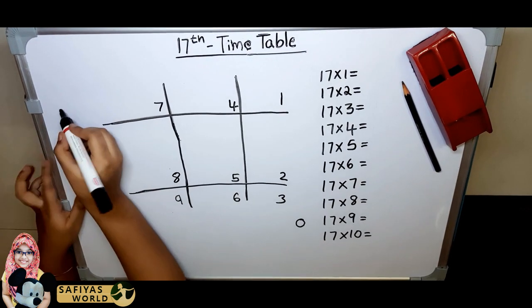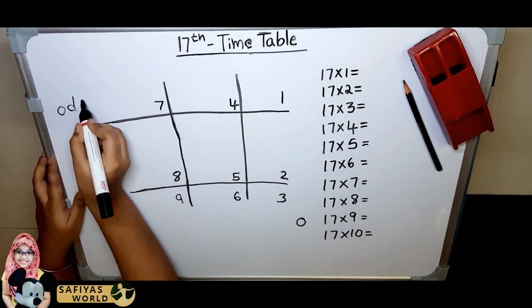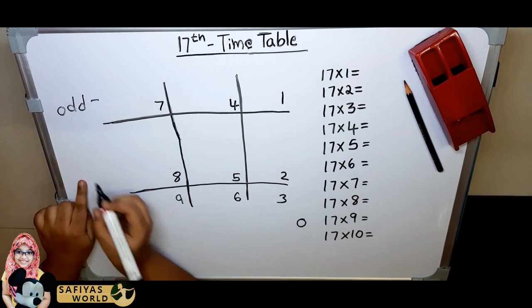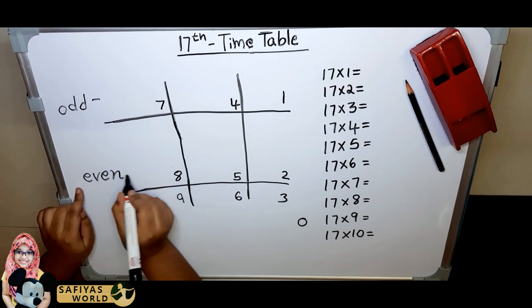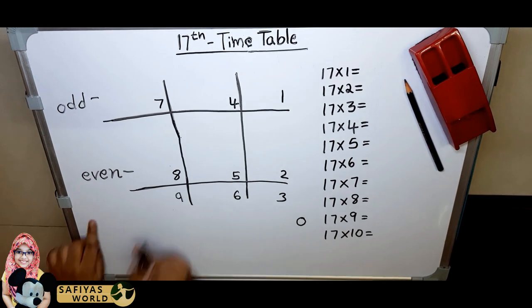First row odd number, second row even number, third row once again odd number.